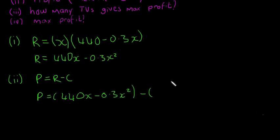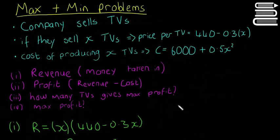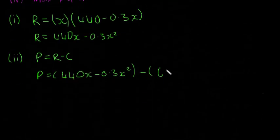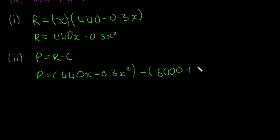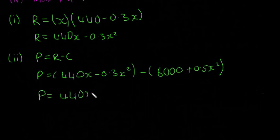So I'm going to write then that P is equal to 440x minus 0.3x squared minus, and what's the cost is given by 6,000 plus 0.5x squared. That means our profit is going to be given by 440x minus 0.3x squared minus 6,000 and minus 0.5x squared.